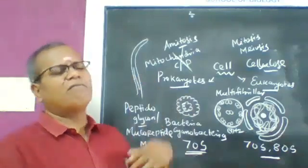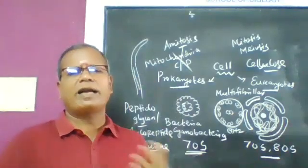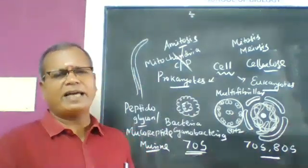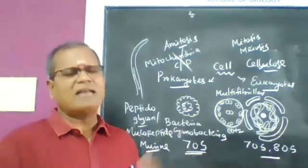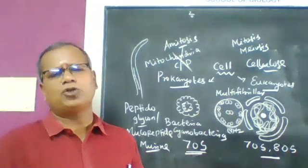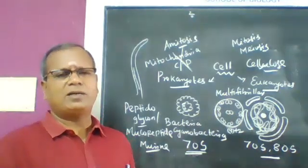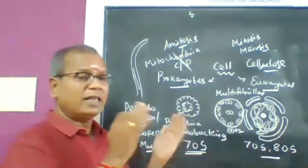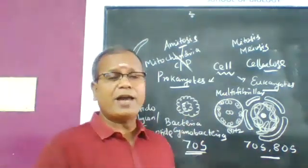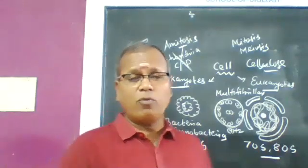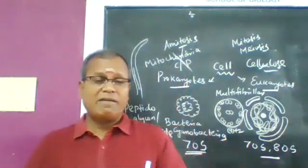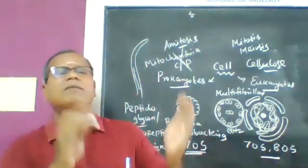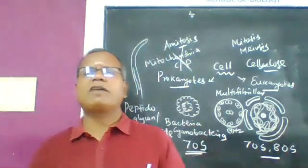In summary, prokaryotes have monofibrillar flagella while eukaryotes have multifibrillar flagella with a 9+2 arrangement. These are the key differences between prokaryotic and eukaryotic cells.